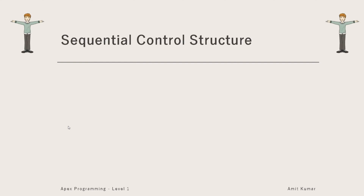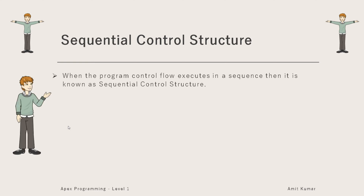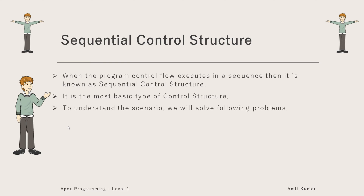Hey guys, I'm Amit Kumar and welcome to this video in which we are going to talk about sequential control structure. When the program control flow executes in a sequence, it is known as sequential control structure. It is the most basic type of control structure, and generally most of the simplest programs have this control structure only.